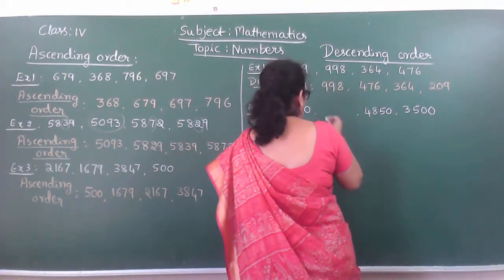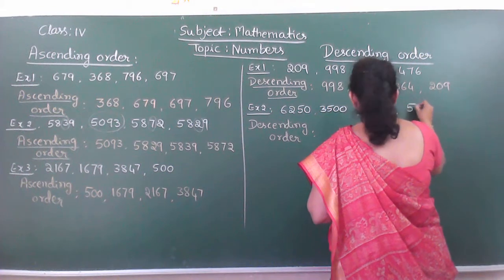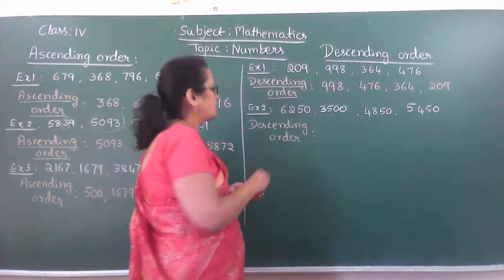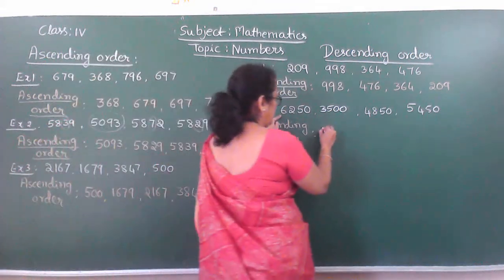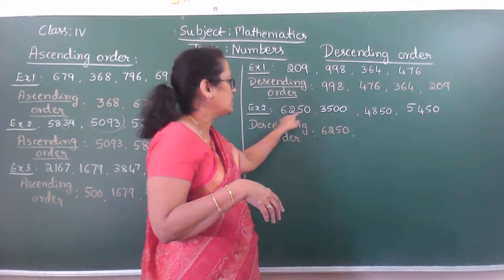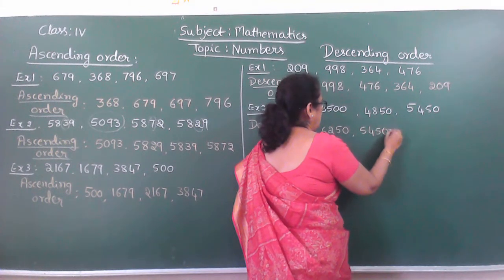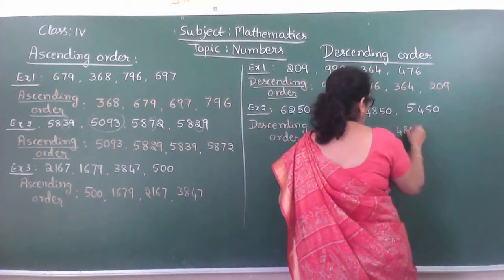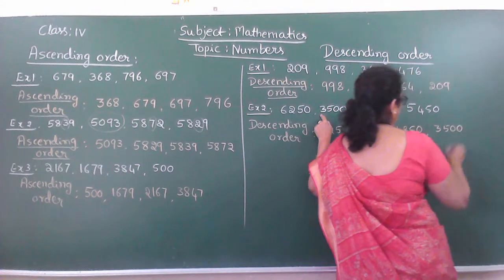So, first go through thousands place: 6, 3, 4, 5. Which is the biggest one? It is 6,250. Next to that, which is the next one among the remaining 3? It is 5,450. The next left over is 4,350. And the very smallest one is 3,500.